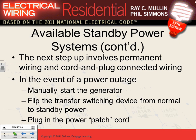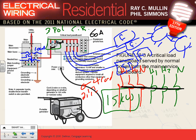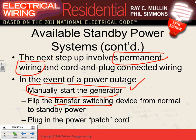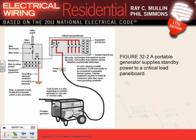There are two options for wiring: cord plug and permanent wiring. The cord plug system has a plug you connect. With permanent wiring, the wires are completely hardwired — no plug. In the permanent wiring setup, you have a manual starter for the generator and a transfer switch device that transfers you from normal to emergency. The wires are permanently connected throughout.